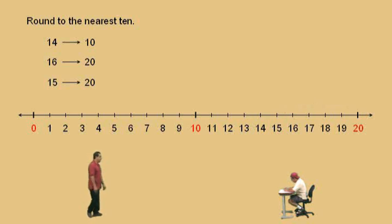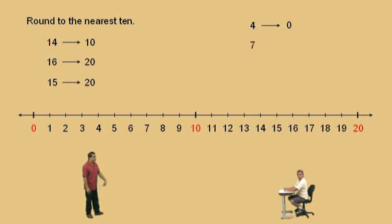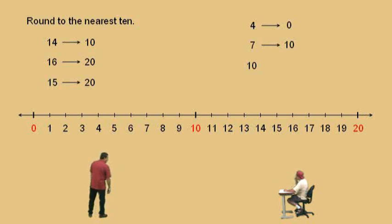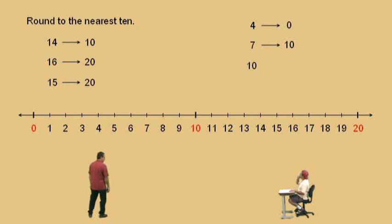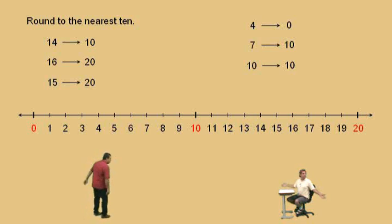Now let's do another one. How about 4, Charlie? Where does the 4 round off to? To the 0, because it's closer to the 0. Okay, Charlie, how about a 7? That rounds to the 10 — very nice. Hey, let's do one more. What does the 10 round off to? It rounds off to the 10, because it's right on the 10. Okay, let's move on.